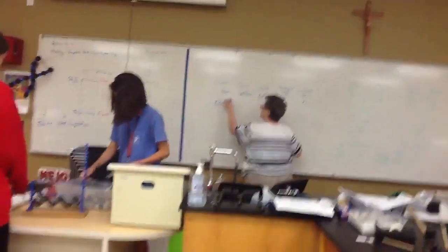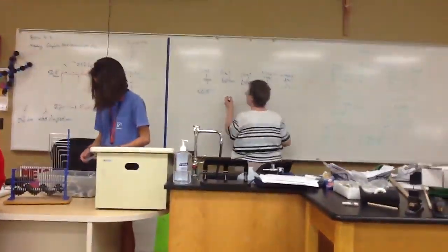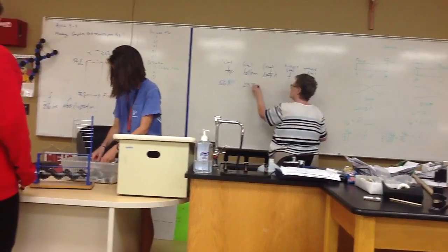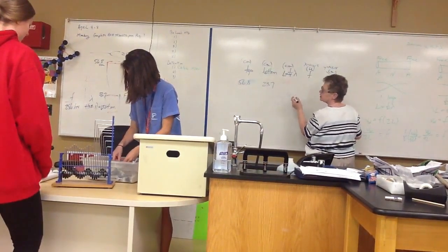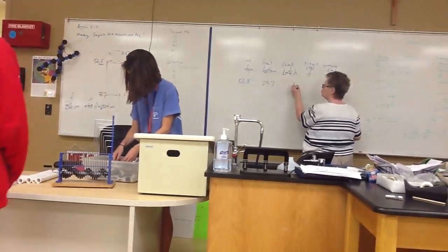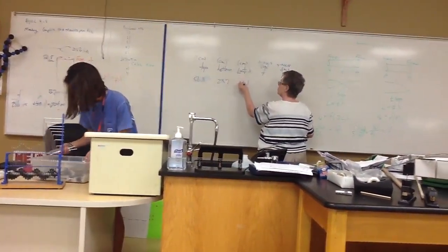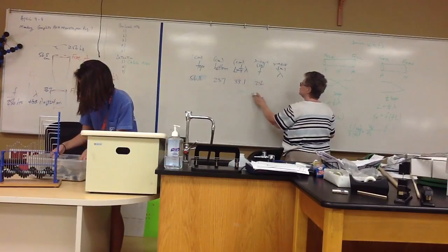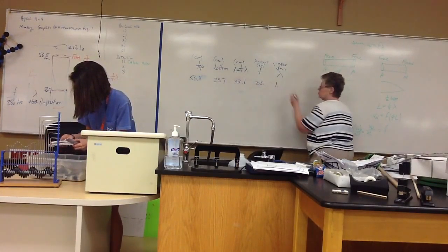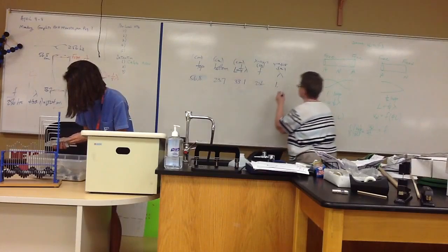So the top number was 56.8. The bottom number was 23.7. If I subtract those two, then I get 33.1, frequency was 256. And if I multiply that by four, I get 1.324.